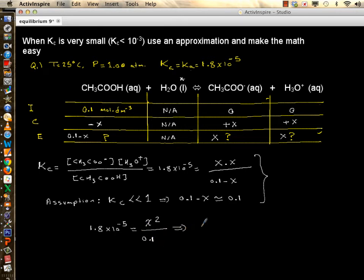Now if you solve for x, it's simply the square root of 0.1 multiplied by 1.8 times 10 to minus 5. And if you plug it into your calculator, it's 1.34 times 10 to minus 3. That's your x. Now if you don't trust the approximation, 0.1 take away this number is approximately 0.099. So you end up with the same number.